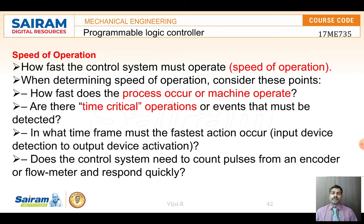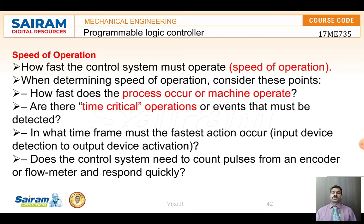Next is speed of operation. If using the PLC for a conveyor belt or material transfer mechanism, we need to know whether it should operate slowly or very fast, and at what speed per minute. We also need to know the machine cycle time — how long the machine operates before waiting for the next process. The fastest action in the system sets the timing for all other devices.